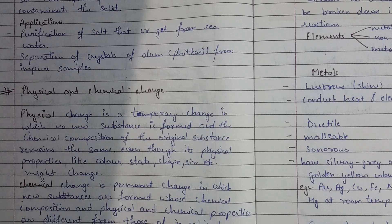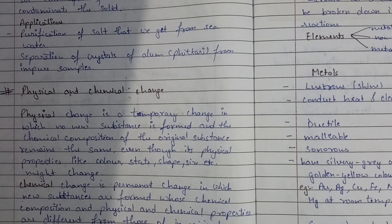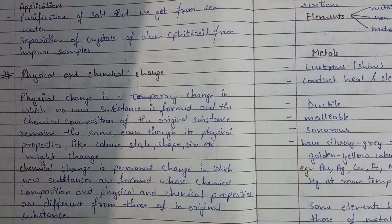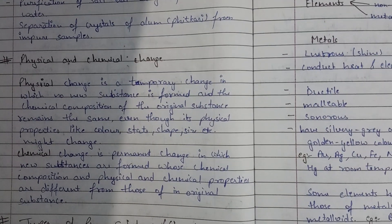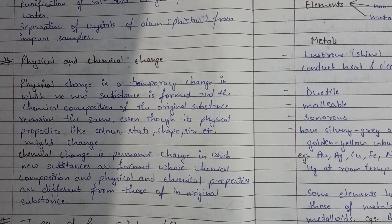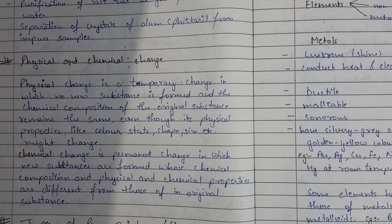Physical properties like color, shape, and size may all change, but the chemical composition remains the same as the original substance. A chemical change is a permanent change in which a new substance is formed, whose chemical composition and physical properties are different from those of the original substance. Both the chemical and physical properties of the new substance differ from the original.